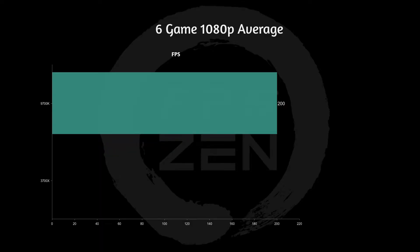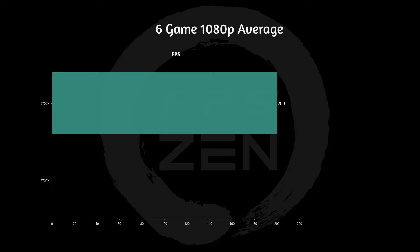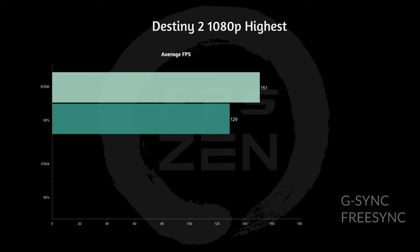On the six-game average, my PC hit exactly 200 FPS across six games at 1080p. In Shadow of the Tomb Raider at 1080p highest settings in DirectX 12, I get 106 FPS average with a 95th percentile low of 80 FPS. In DirectX 11 it's much worse — 89 FPS with a 95th percentile low of 56 FPS. This is a great game that falls within G-Sync or FreeSync range and pairs well with those monitors.